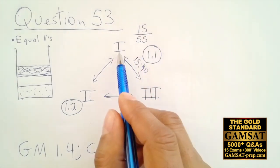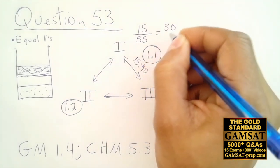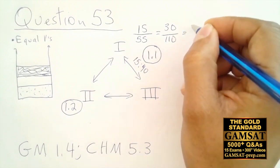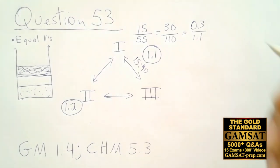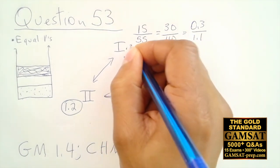So 15 over 55, which is the ratio of Roman numeral 1, is the same thing as saying 30 over 110, which is 0.3 over 1.1. So the 55 is leading you to the 110, which is leading you to the 1.1, which gives you the exact amount of moles of Roman numeral 1.